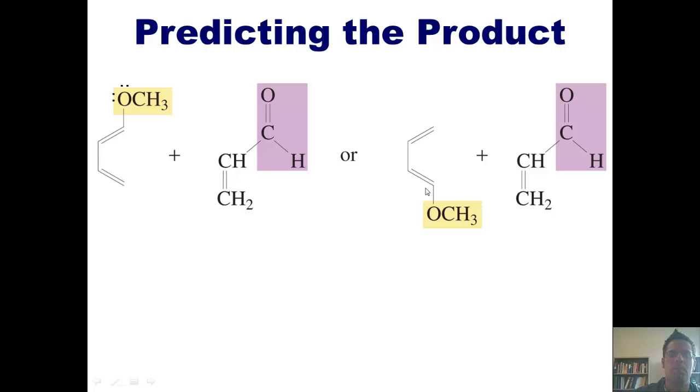If you draw it out on paper, the orientation of this diene facing up or facing upside down actually will give you completely different products. So the question is, which of those products actually forms, and how in the world can you predict it?